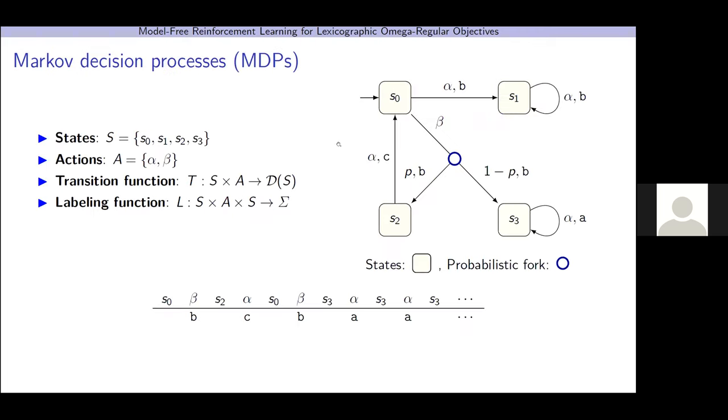So, the models we're concerned with are Markov Decision Processes, or MDPs. An MDP consists of a set of states, a set of actions, a transition function, and a labeling function. The transition function tells us the system dynamics. Given a state-action pair, it gives us a probability distribution over next states. The labeling function takes a transition tuple and assigns it a letter. So, on the right, I have an example MDP where I've denoted the states by boxes and the transitions by arrows.